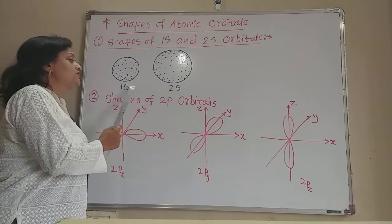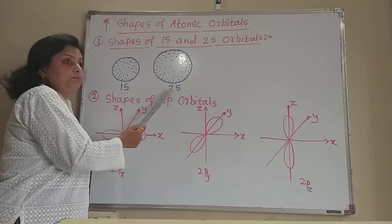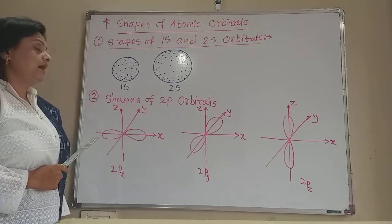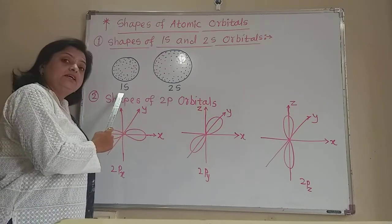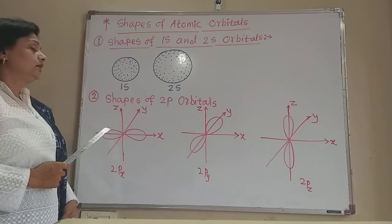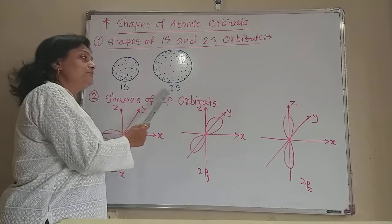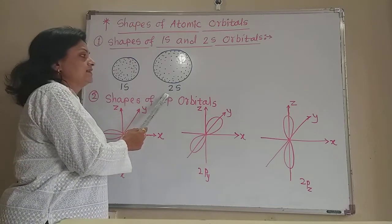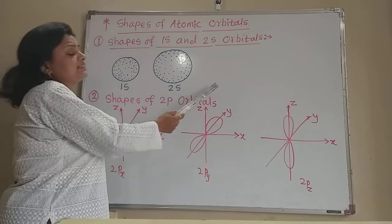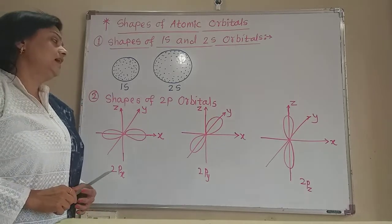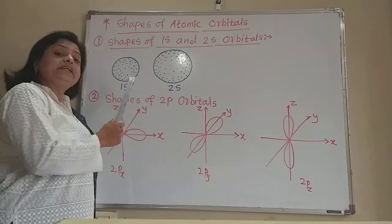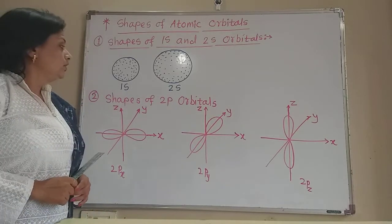This 2s orbital is somewhat bigger in size. The 2s orbital is larger than the 1s orbital. In this way, there are 3s and 4s orbitals. All S orbitals always have a spherical shape.